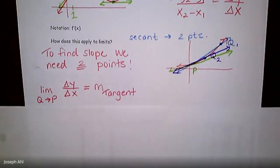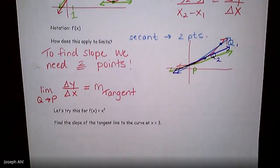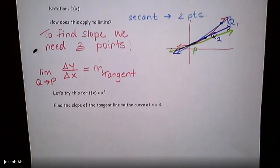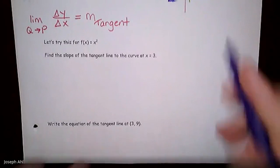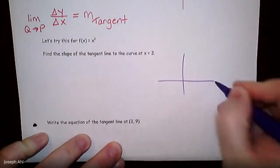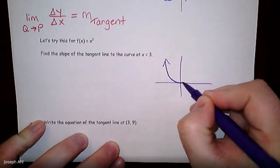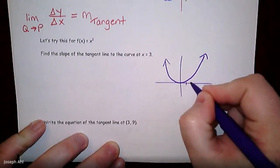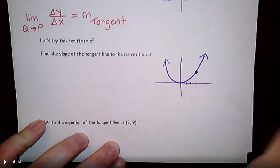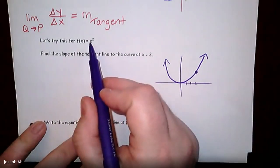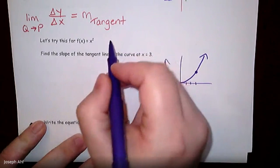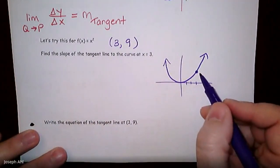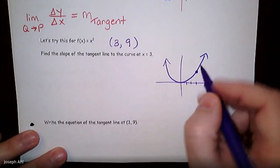So we're going to put that into practice with the function y equals x squared. So we take a look at y equals x squared. Let's find the slope of the tangent line to the curve at x equals three. So let's go ahead and just recall what our good old friends y equals x squared looks like. Let's say we define this to be where x equals three is. In fact, we know that since it's on the curve x squared, three squared is nine. So we know that this is the point three nine.